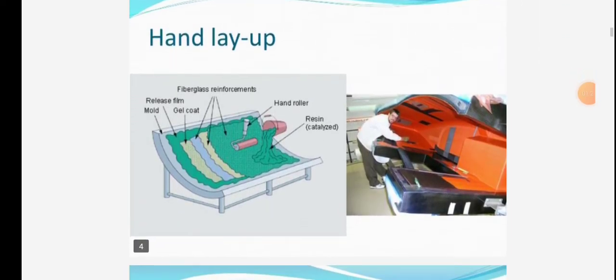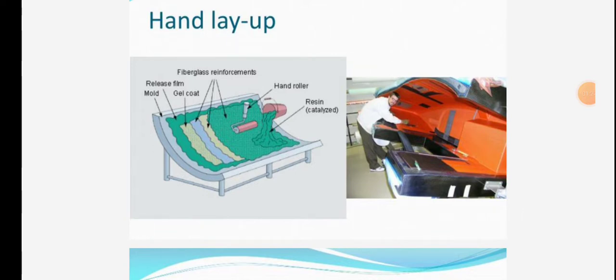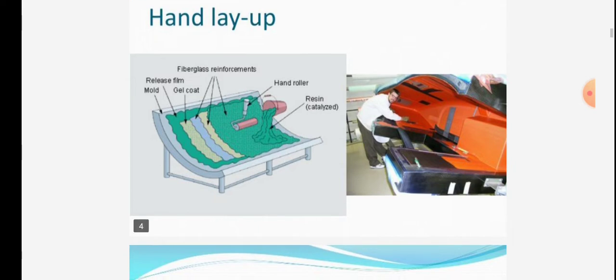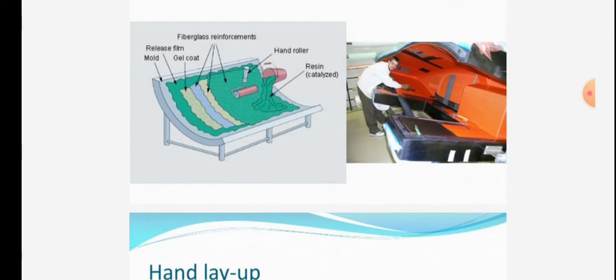Hand layup process is given in the figure. Release film mold is shown in the figure: gel coat, fiberglass reinforcements, hand roller, resin catalyzed, etc. The diagram shows the hand layup method of manufacturing composites.